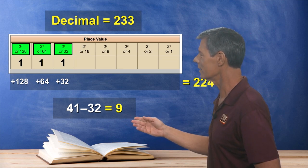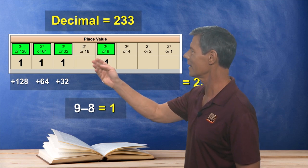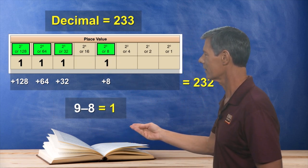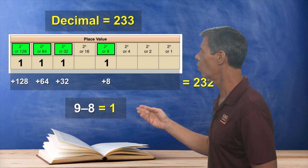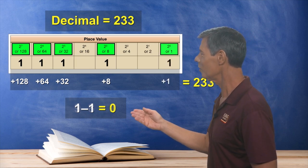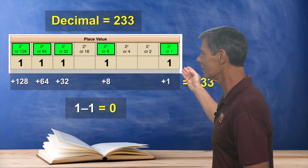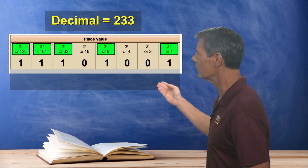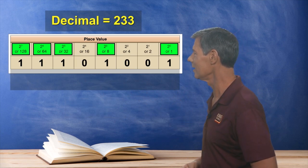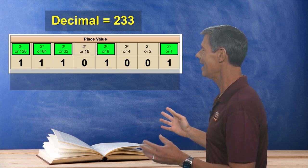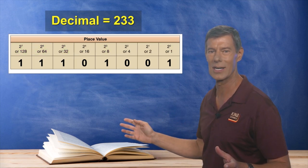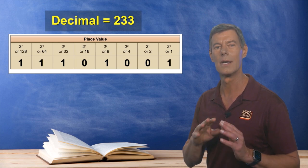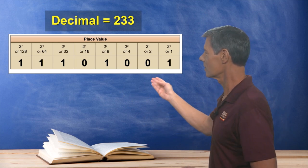Which can then go into this column right here, where we'll mark a 1 and subtract 8. Now that leaves us with just 1 left over. So we go into this final column and mark a 1 down. Now you just go back and put a 0 in any column that's left over. And that gives us our final binary number for 233, which is 11101001.